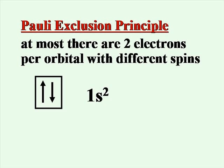The Pauli exclusion principle says that at most there are 2 electrons in any orbital and they're going to be in there with opposite spins. This allows them to reduce their repulsions.